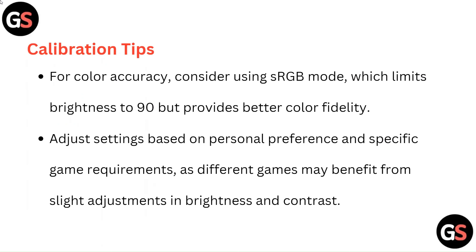Calibration tips: For color accuracy, consider using sRGB mode, which limits brightness to 90 but provides better color fidelity. Adjust settings based on personal preference and specific game requirements, as different games may benefit from slight adjustments in brightness and contrast.